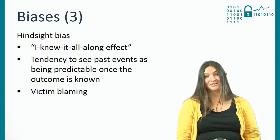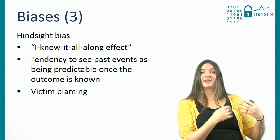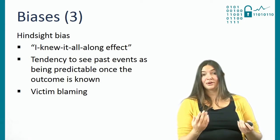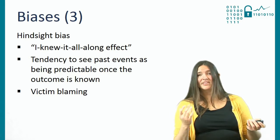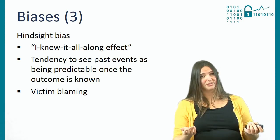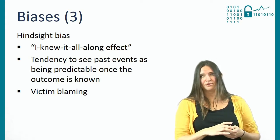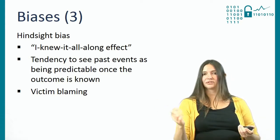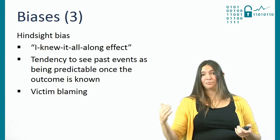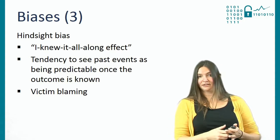The second bias is the hindsight bias, also called the 'I knew it all along' effect — the tendency to see past events as having been predictable once you know the outcome. We all know the Titanic sank, so when we think about the captain's decision to keep going or even increase speed, we now think that was a stupid decision. But we know what happened; the captain didn't. This can also lead to victim blaming — for example, if a girl walks home through a slightly dodgy neighbourhood and it ended badly, we're more likely to say that was a stupid decision than if we didn't know the outcome.